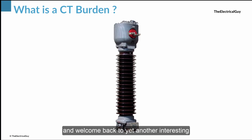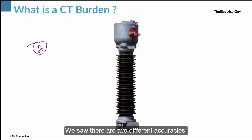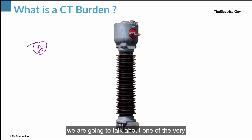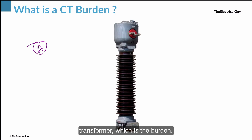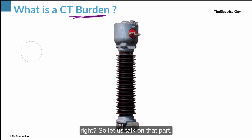Hello everybody and welcome back to yet another interesting video. In the previous video we talked about the accuracy part of the current transformer. We saw there are two different accuracies — metering and protection — and in this video we are going to talk about one of the very important concepts of the current transformer, which is the burden.